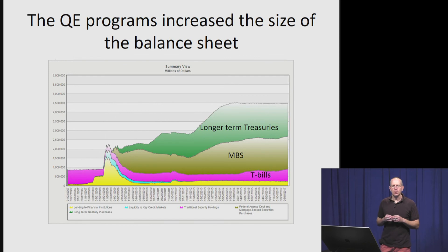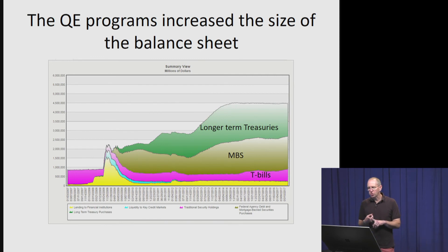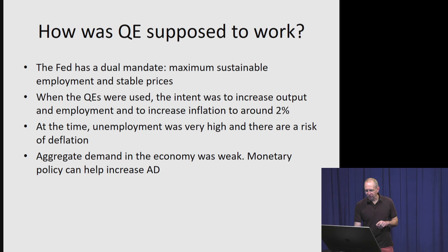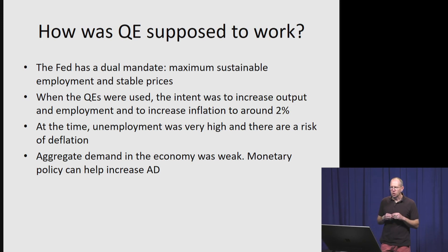As we talked about in the previous video, the quantitative easing programs — the large-scale asset purchases — dramatically increased the size of the Fed's balance sheet from a little over $800 billion to over $4.5 trillion, roughly a quintupling. It also dramatically changed the composition from mostly treasury bills and discount loans to banks, to longer-term treasuries and mortgage-backed securities. The Fed has a dual mandate: maximum sustainable employment and stable prices. When the QEs were used, the intent was to increase output and employment and raise inflation back to the Fed's objective of around 2%.